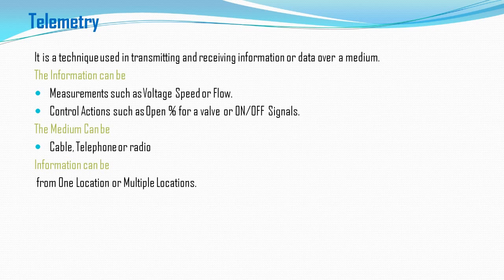The information we need to send includes voltage, speed, flow, temperature, level, pressure, on/off condition signals, control actions, and the percentage opening of a valve. All of this information needs to be sent out to the main control room or master SCADA room.